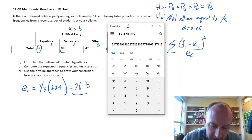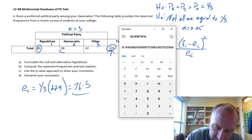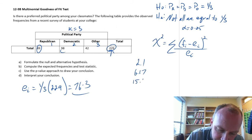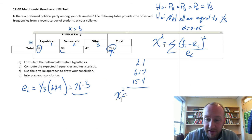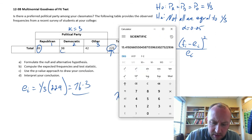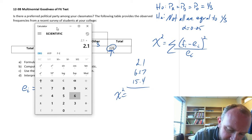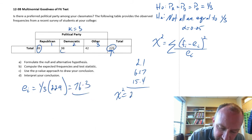The last category is Other: 42 minus 76.3, squared, divided by 76.3, giving 15.4. Our chi-squared test statistic is just the summation of those values: 2.1 plus 6.17 plus 15.4 equals 23.67.